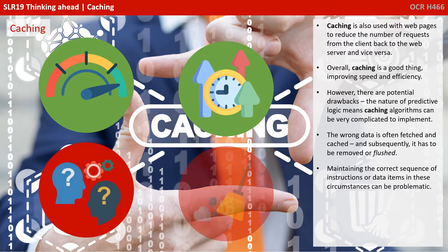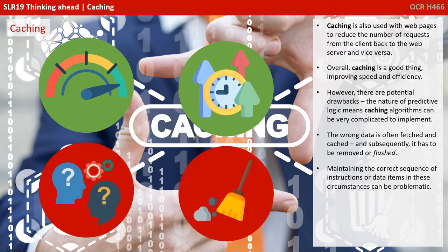However, there are potential drawbacks. The nature of predictive logic means caching algorithms can be very complicated to implement. The wrong data is often fetched and cached, and subsequently it has to be removed or flushed from the cache. Maintaining the correct sequence of instructions or data items in these circumstances can prove to be problematic.